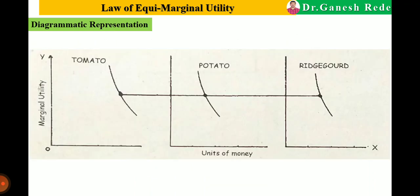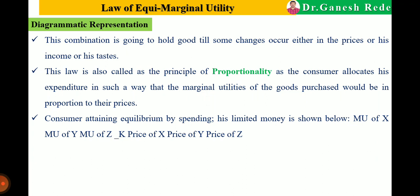Diagrammatically, it is represented for tomato, potato, and ridge gourd, with units of money on the x-axis and marginal utility on the y-axis. At the end, the marginal utility for all units of money spent is equal — that is the law of equimarginal utility. This combination holds good until changes occur in prices, income, or the consumer's tastes. This law is also called the principle of proportionality because the consumer allocates expenditure so that marginal utilities of goods purchased are in proportion to their prices.